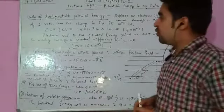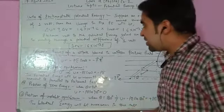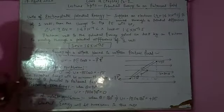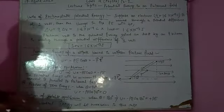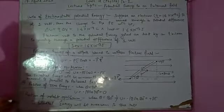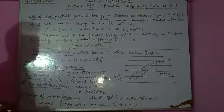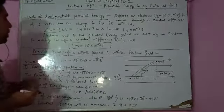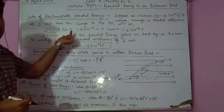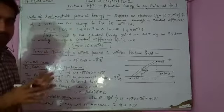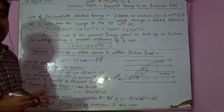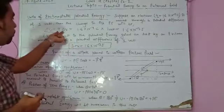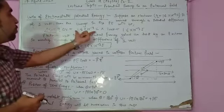Good evening students. We are going to continue our previous lecture and discuss the units of electrostatic potential energy. We already have calculated potential energy, and now it's time to evaluate its unit. We know that potential energy U is equal to q into V. Suppose we have brought one electron — whenever we define a unit, we keep all physical quantities as one, which is why we pick just one electron.